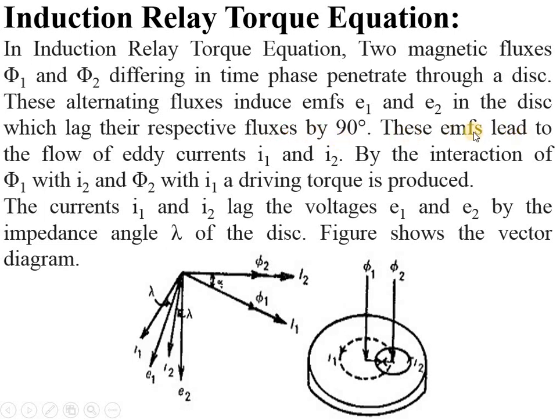These alternating fluxes induce EMF e1 and e2 in the disc which lag their respective fluxes by 90 degrees. These EMFs lead to the flow of eddy currents i1 and i2. By the interaction of φ1 with i2 and φ2 with i1, a driving torque is produced.